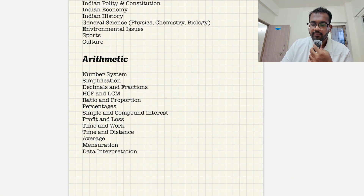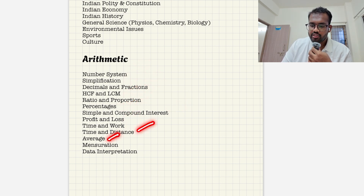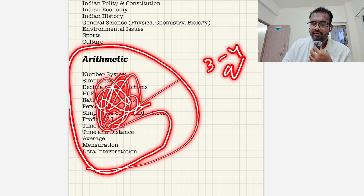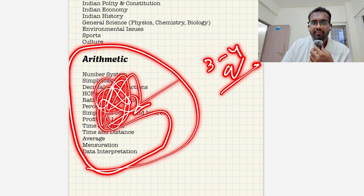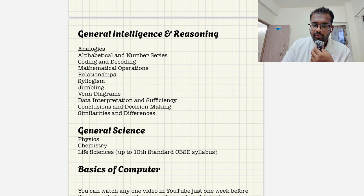Next comes arithmetic, the mathematical aptitude part. Topics include number system, simplification, decimal fractions, HCF, ratio and proportion, percentage, simple and compound interest, profit and loss, time and work, time and distance, average, mensuration, and data interpretation. In my case I have not prepared this — I totally skipped it, as you will get only around three or four questions. My suggestion is if you are weak in math, leave this section to save time and prepare for the major topics.